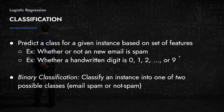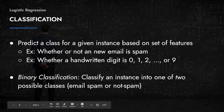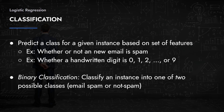Since it's not a continuous variable you're trying to predict, it can't be a regression model. We're primarily concerned with binary classification, where you classify an instance into one of two possible classes — for example, spam or not spam. Once you understand binary classification, it's not too hard to scale it up into multi-class classification.